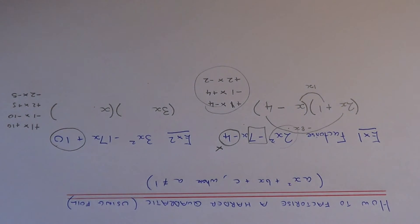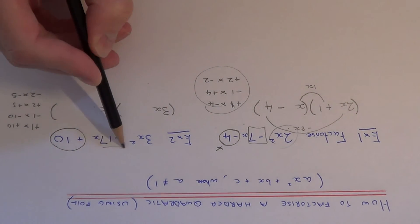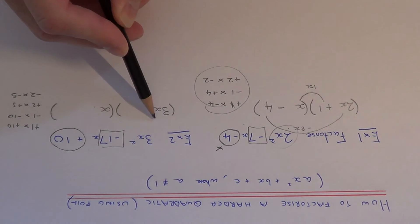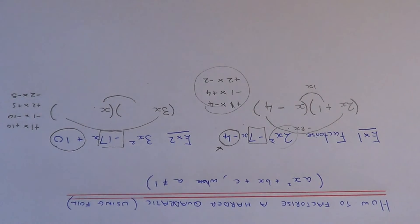One of these pairs of numbers must be the correct one. This time we need minus 17x, so the outer terms and the inner terms multiplied together must add together to give minus 17.